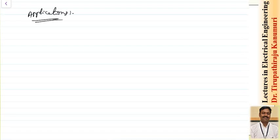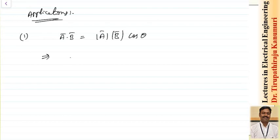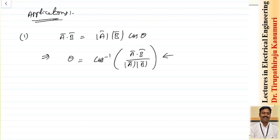Let us see the applications of the scalar product. The first application: from the definition of the scalar product, we know that a dot b equals magnitude of a times magnitude of b times cos theta. From this, I can calculate theta as cos inverse of (a dot b) divided by (magnitude of a times magnitude of b). That means I can calculate the angle between two vectors using the dot product.